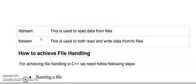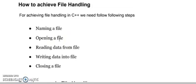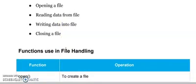These are the three data types — just like we study integer, float, or any class type. These are from the fstream library. Now, how do we achieve file handling? First, you will name the file, then open it, then read or write, then close it. Always close the file — when you open it, you need to close it.